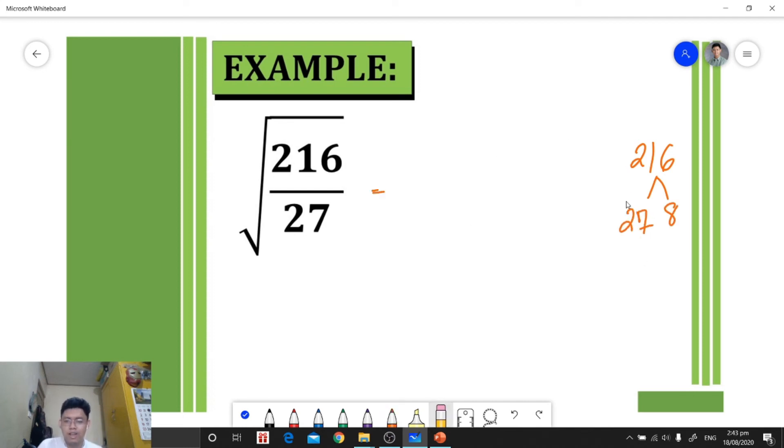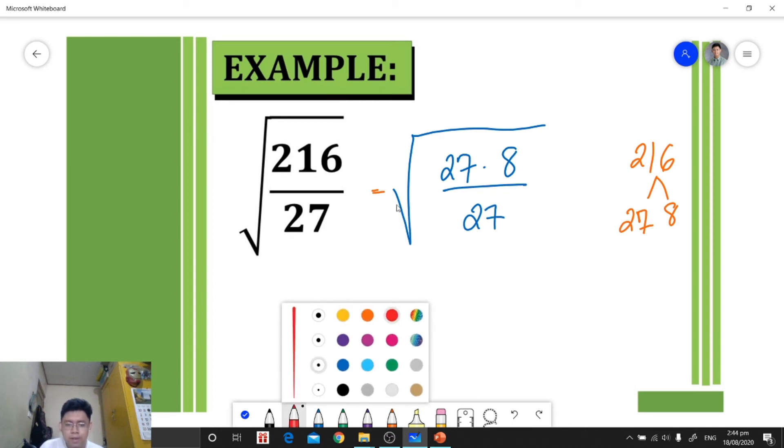Now that I already got the factor of 216, we will just simply rewrite it in this form: 27 times 8 over 27. Now I can apply cancellation because they have the same factor, so cancel, cancel.